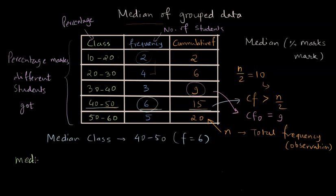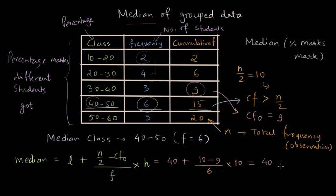The formula for median is given as follows. We write the lower limit of the median class first, which is L, and we add to it the fraction where the numerator is n by two minus CF naught divided by the frequency of the median class. This fraction is multiplied by H, which is the range of the class. L is 40, plus n by two is 10, minus CF naught is nine, divided by the frequency 6, times the range 10. This gives us the median as 40 plus 10 over 6, which is 41.66.